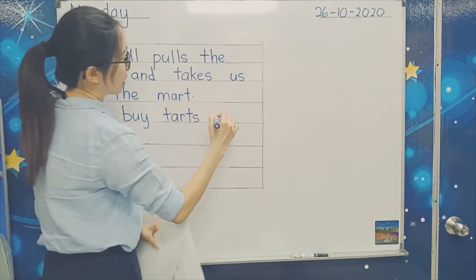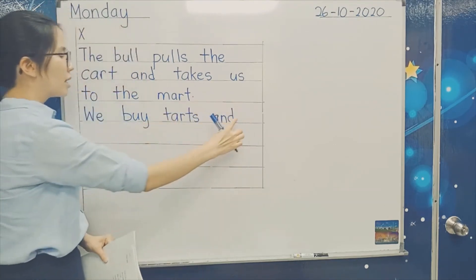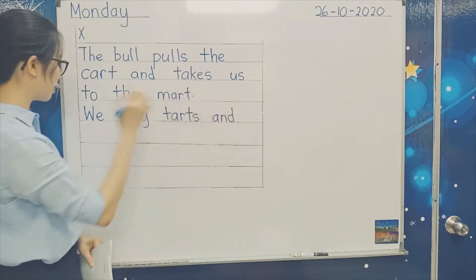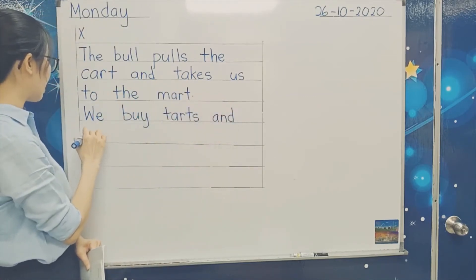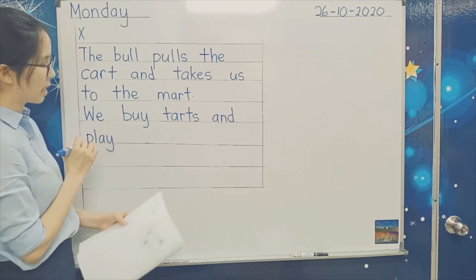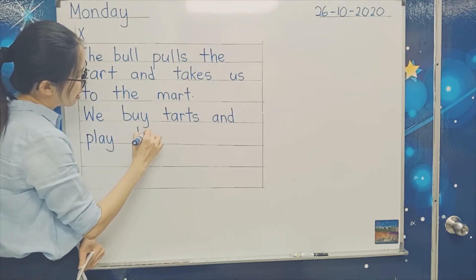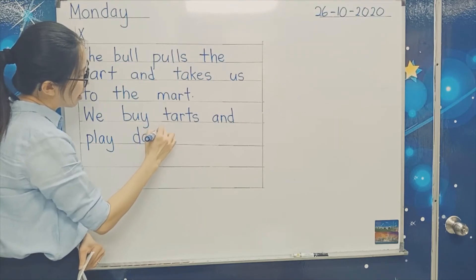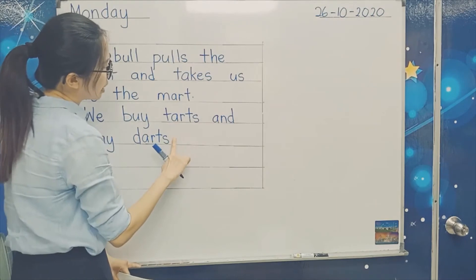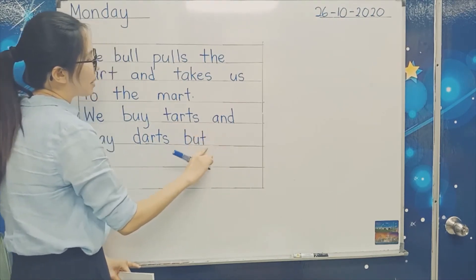Put one finger, A-N-D, and. Here, and has no space, so Ms is going to write down here. If you have space, you can continue writing. P-L-A-Y, play. And then next one, D-A-R-T-S, darts. Another finger, B-U-T, but. Another finger, I.